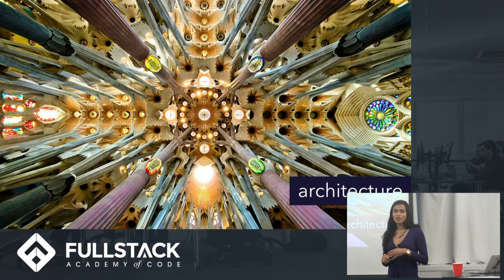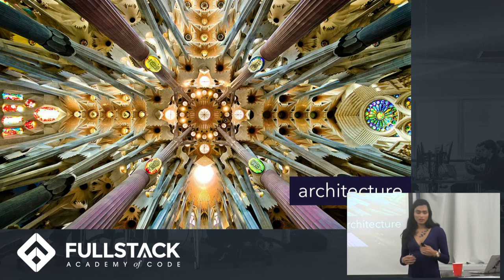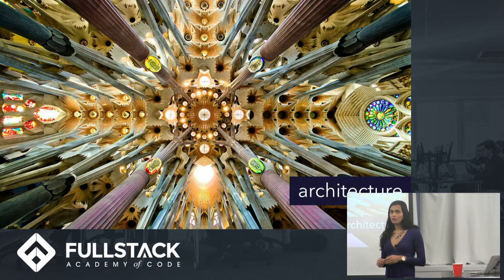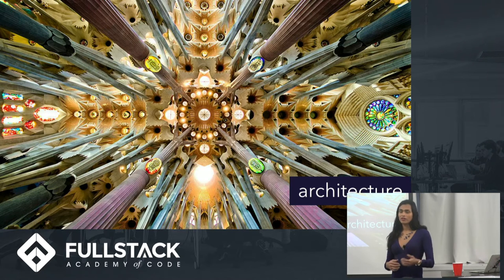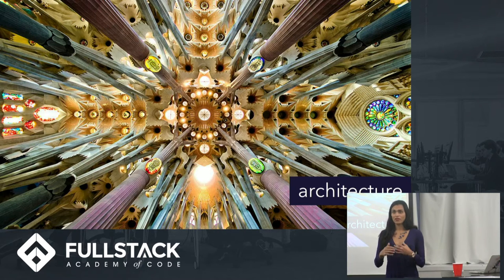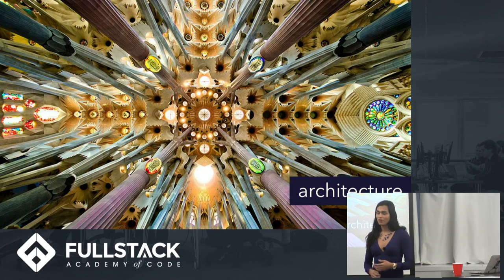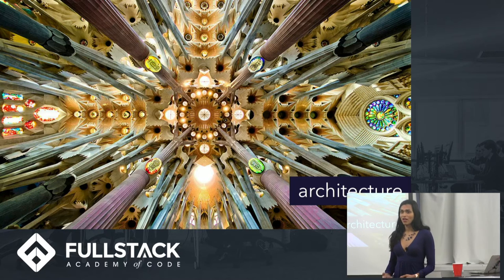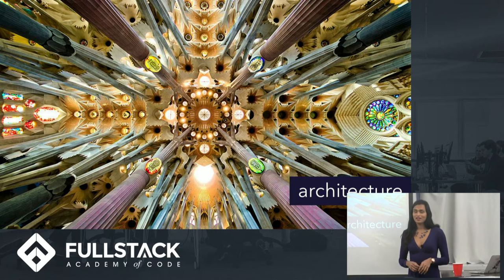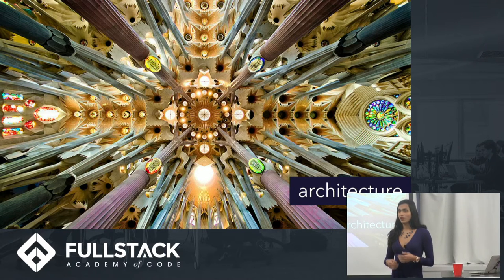When we think about architecture, and particularly when we think about software architecture, we end up thinking about the finished products of it — the way that a program is put together, maybe a design document or a white paper. These are artifacts of the architectural process. But in order to understand one of those for any reasonably complicated system, you need a lot of domain-specific knowledge. There are a lot of different patterns, a lot of different ways that you could solve any given problem.